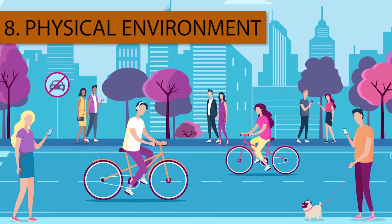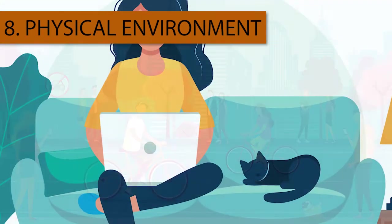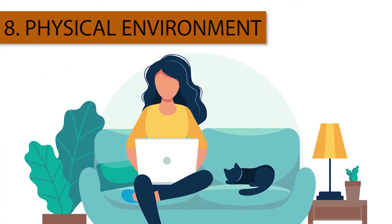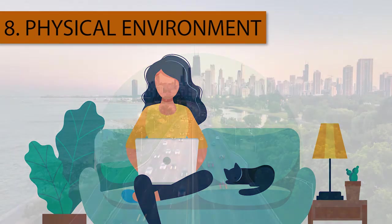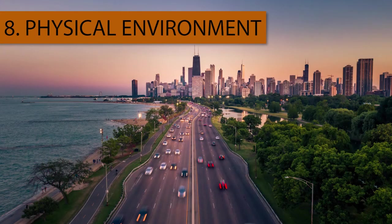Eight: Physical Environment. The obvious area this refers to is your home. How is it set up? Does it give you a nice feeling? Is it conducive to productivity, satisfaction, and self-realization? Does your home support you in your goals? Is it a place you are proud of and makes you feel good? Now, if you are location independent or have the desire to live all over the world, you can look at your physical environment in a bigger picture.